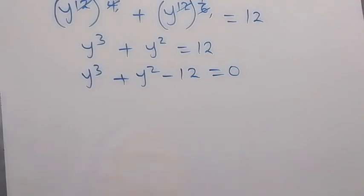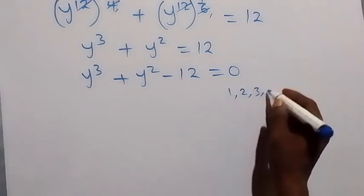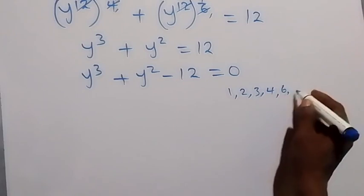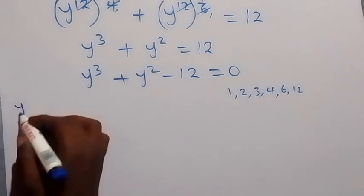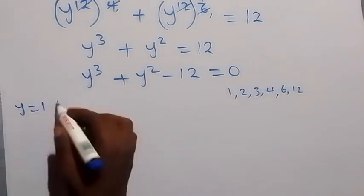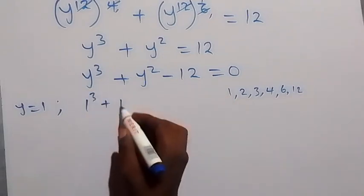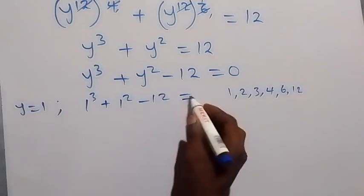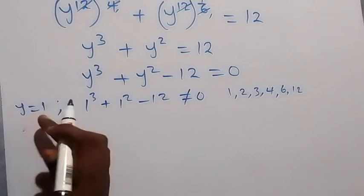We can find one of the factors of this polynomial by finding one of its roots. The factors of 12 are: 1, 2, 3, 4, 6, and 12. Starting from 1: if y equals 1, the equation becomes 1 cubed plus 1 squared minus 12, which is not equal to 0. So 1 is not a root.